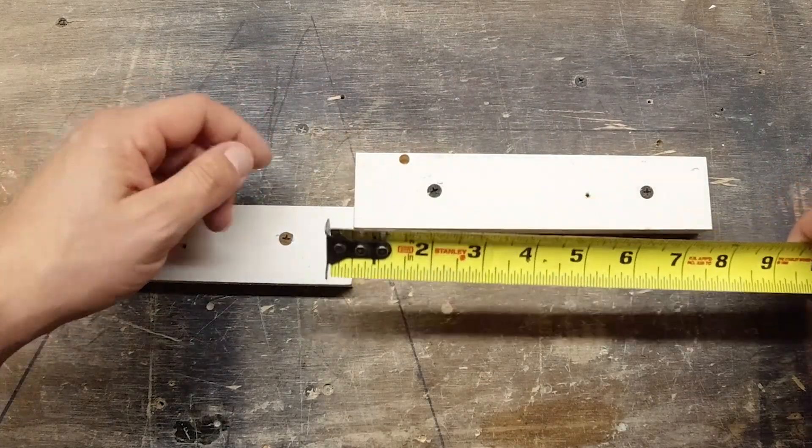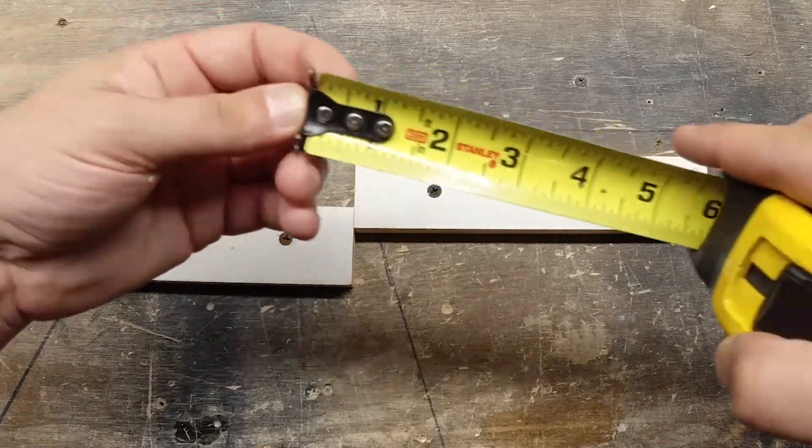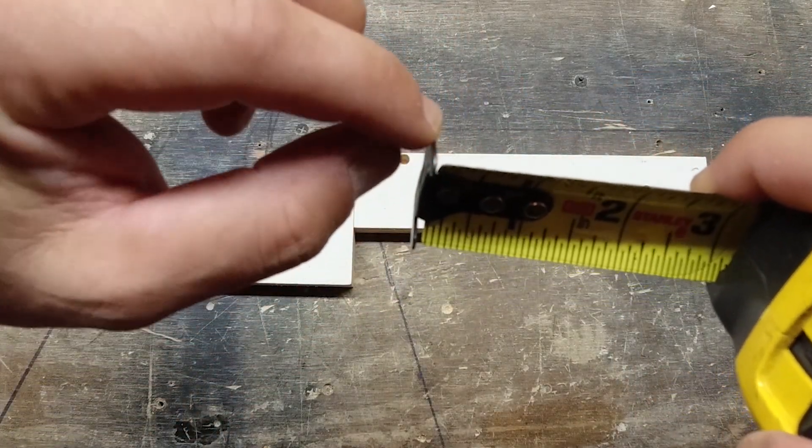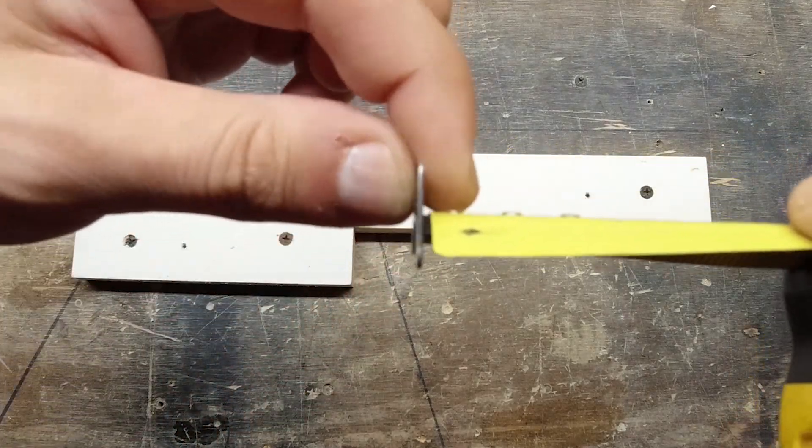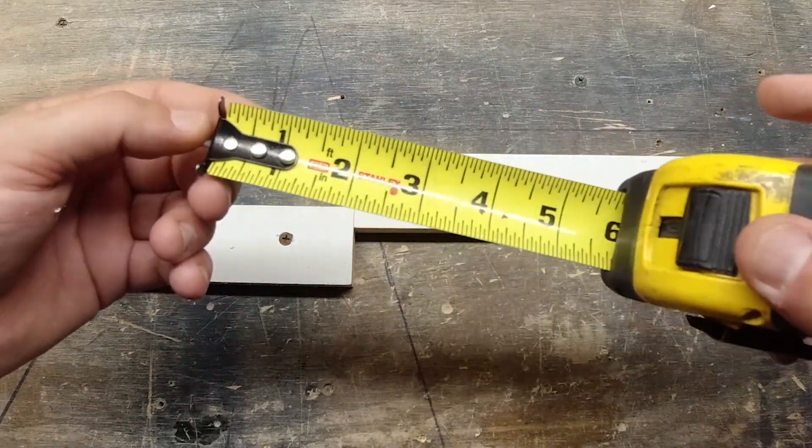Even though you're pushing this here and pulling this here, it's going to come up with the same measurement because of this movement. That movement allows for the distance or the thickness of the end of the tape measure here, this hook. It's a very simple thing but it's very important.